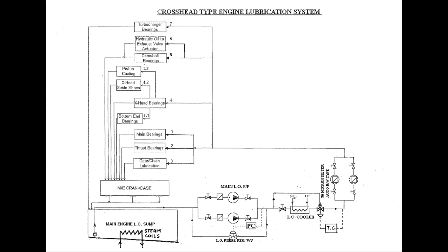Lube oil is also led to the cams, roller guide, camshaft bearings, and finally to the hydraulic pump for actuating hydraulically operated exhaust valves — hydraulic opening, spring-air closing. The rocker arm is absent in large two-stroke engines. From the hydraulic pump, oil is sent for the opening of each exhaust valve.